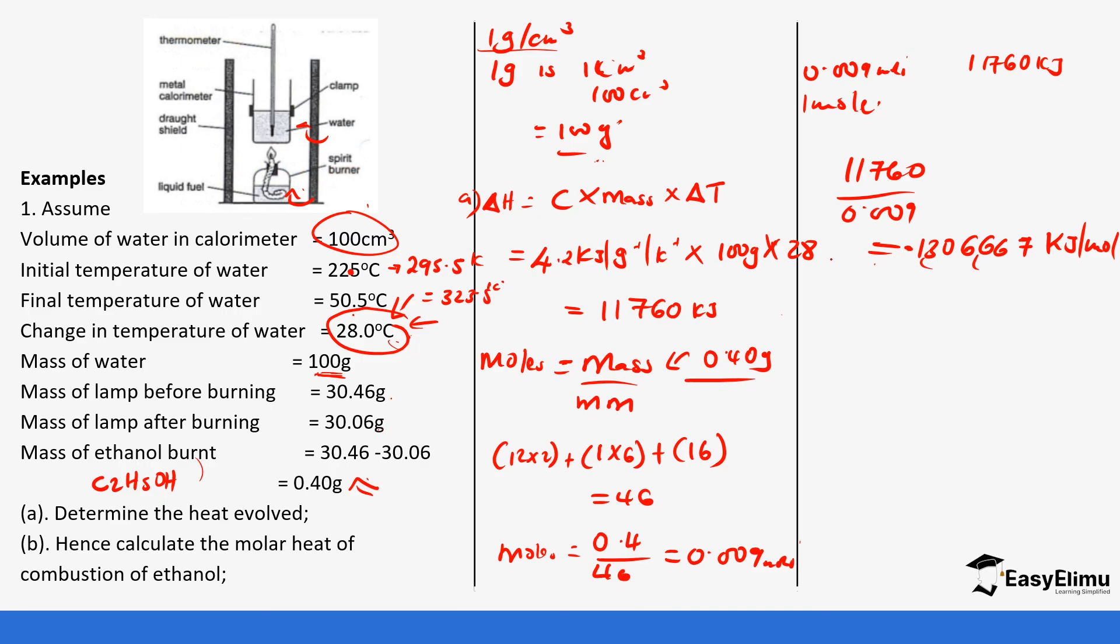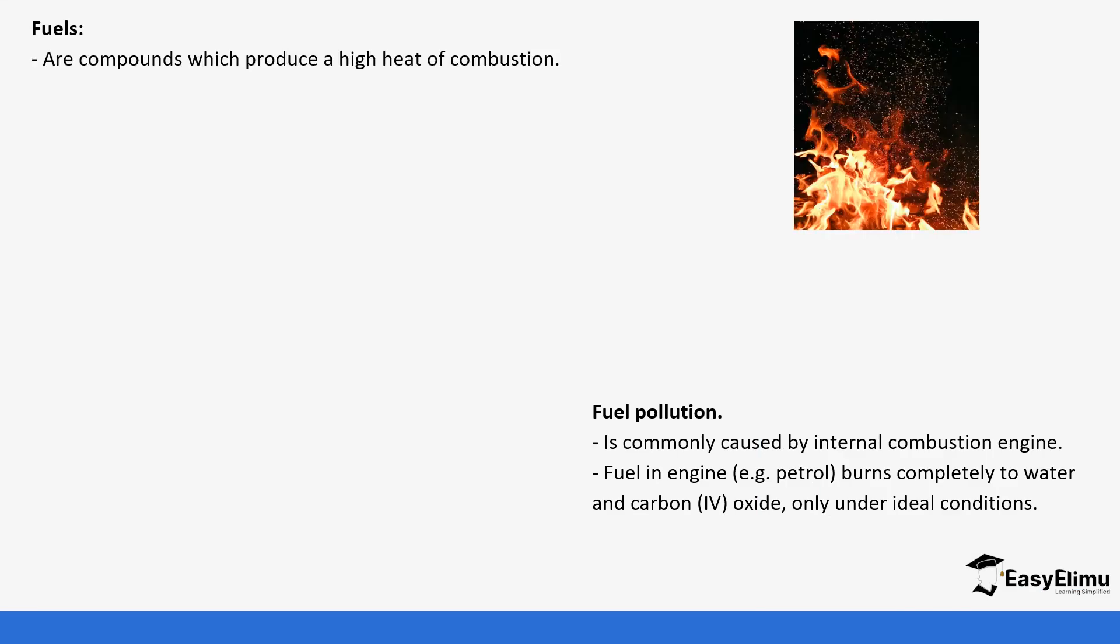Next let's look at the fuels and how do you choose the best fuel. Fuels are usually compounds which produce high heat of combustion. They can be solids such as charcoal wood and coal and they can also be liquids such as ethanol and gasoline. Just like you've seen in the experiment ethanol. They can also be gases such as methane. We know some of these gases are used for cooking.